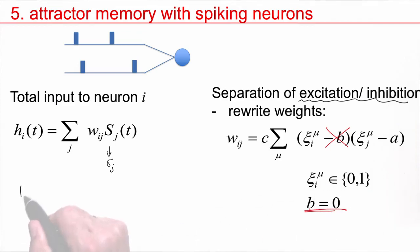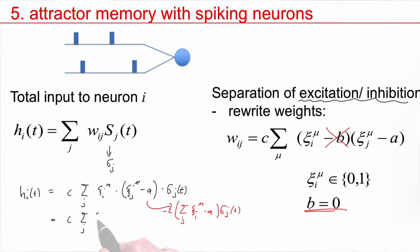If you do a little calculation, h_i of t, and I take this b equal to 0 situation, c times sum over j, c_i^mu times c_j^mu minus a. Here, for simplicity, I've dropped the sum over mu times sigma_j. I made a replacement under the conditions discussed on the previous slide. You see that we can separate this. I can pull out the term with a. Then I have sum over j, c_i^mu times a times sigma_j of t with a minus sign. And I would keep the other term, sum over j, c_i^mu, c_j^mu, sigma_j of t.